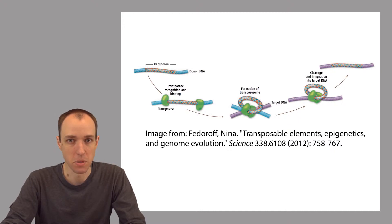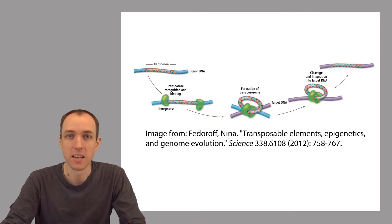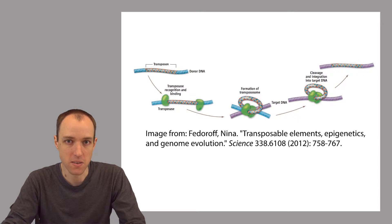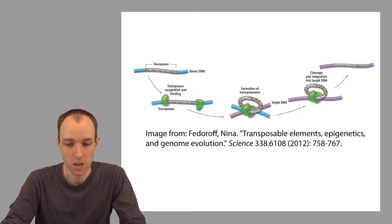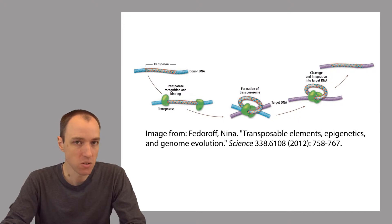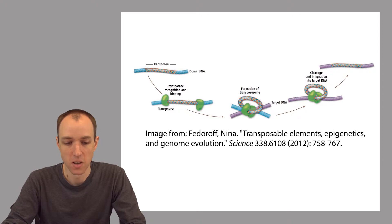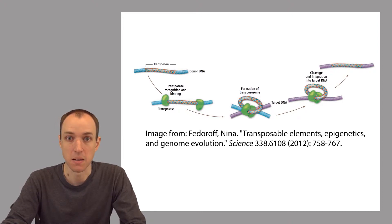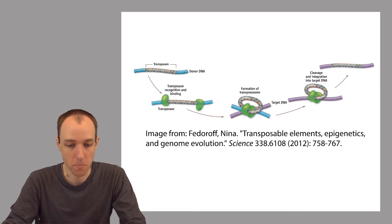Some pretty interesting things happen to genomes over time. One thing that happens is that the genome gets invaded and infiltrated by little bits of DNA — sort of DNA interlopers — called transposable elements. These are tiny little chunks of DNA that are capable of getting themselves incorporated into the genome, and then when conditions are right, they're also capable of copying and pasting themselves, or cutting and pasting themselves throughout the genome.